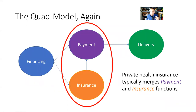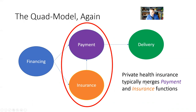Coming back to the quad model: private health insurance typically merges the payment and insurance functions. Government services like Medicare merge the financing, payment, and insurance functions together. The National Health Service in Great Britain merges all four functions, as does the Military Health System and Indian Health Services. But what we see primarily in the United States is insurance as a merger of the payment and insurance functions.